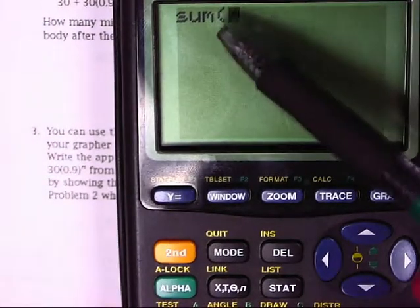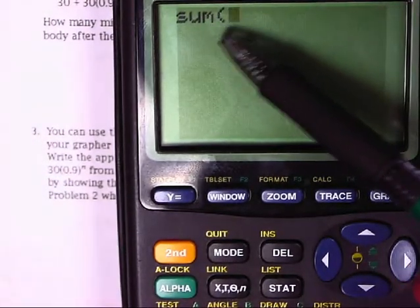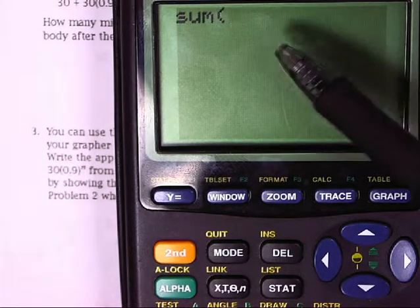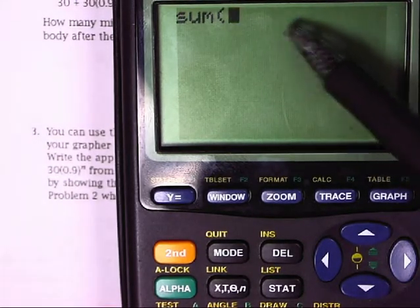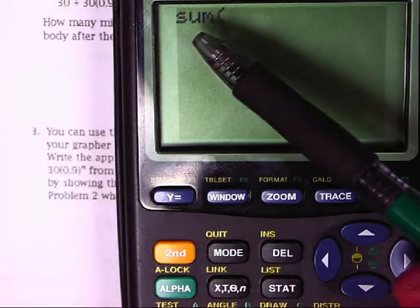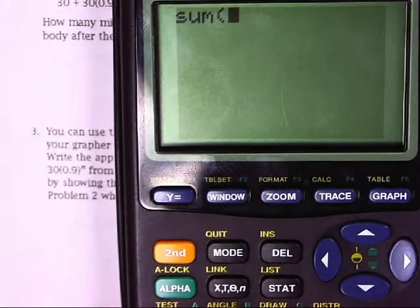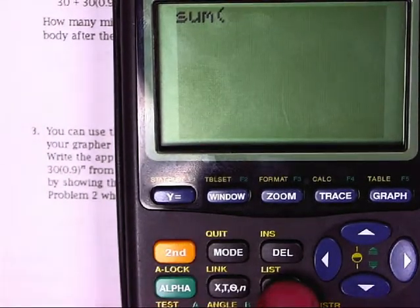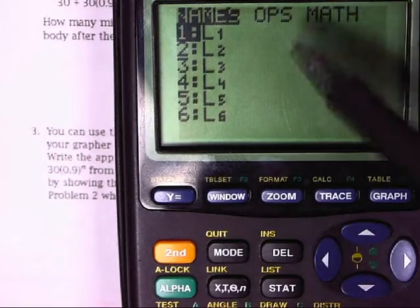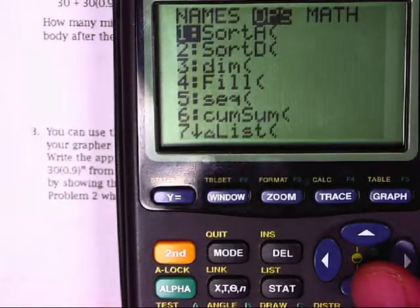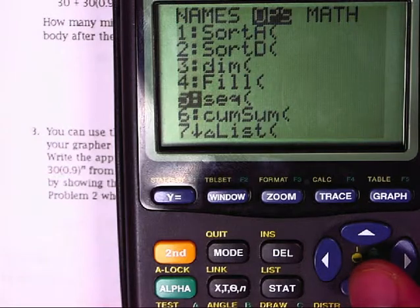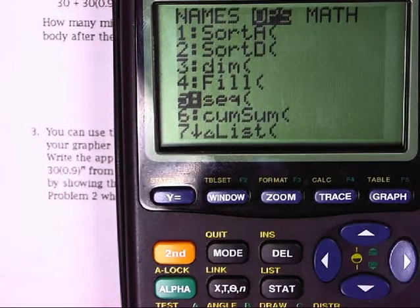We technically could type in a bunch of numbers here, and the calculator would add it all up for us, but that's not really the point here. You're going to hit Second List again. Now you're going to go into the Operations menu, move over to Operations, and down to number 5 again, and it says SEQ for Sequence. So you hit Enter again.